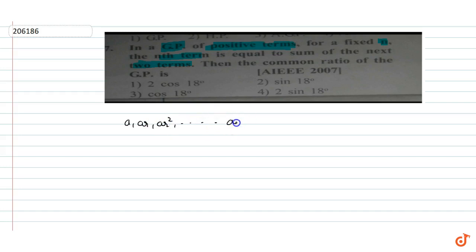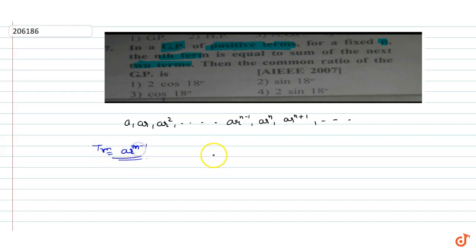The question given is: in a GP of positive terms, for a fixed n, the nth term is equal to the sum of the next two terms. Then the common ratio of the GP is? We know a GP is: a, ar, ar², and so on up to n terms. The nth term of a GP is a·r^(n-1).